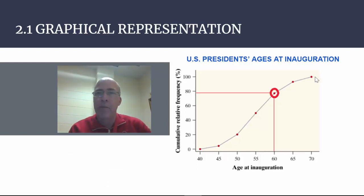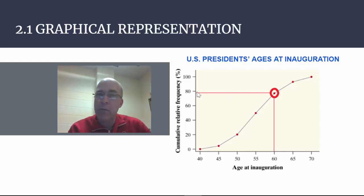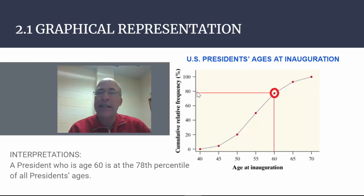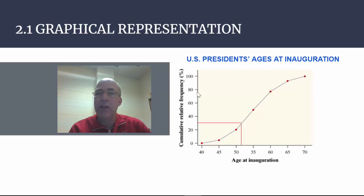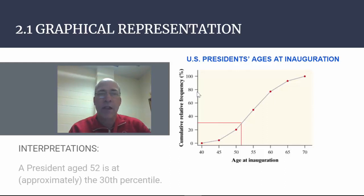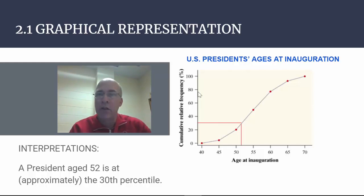For example, looking at this dot here — we seem to be at age 60, and it links over to about 78%. So we could say that a president who is age 60 is at the 78th percentile — he's as old or older than 78% of the presidents. How about age 52? Drawing that line, a president age 52 is at about the 30th percentile. It's okay to eyeball these things as long as you're in the ballpark and clearly using the graph to make your interpretation.